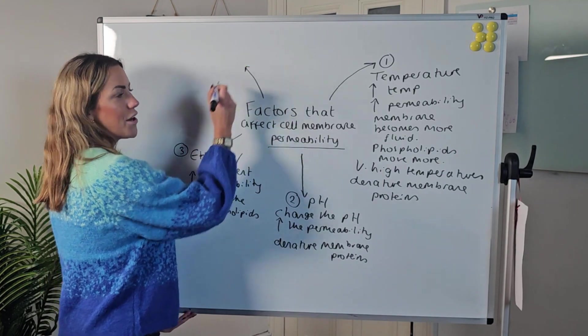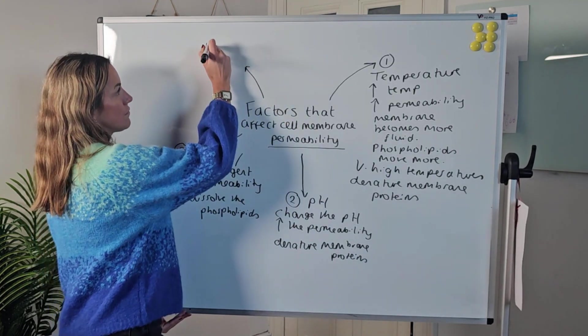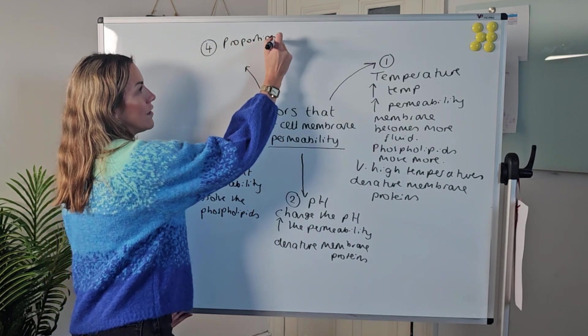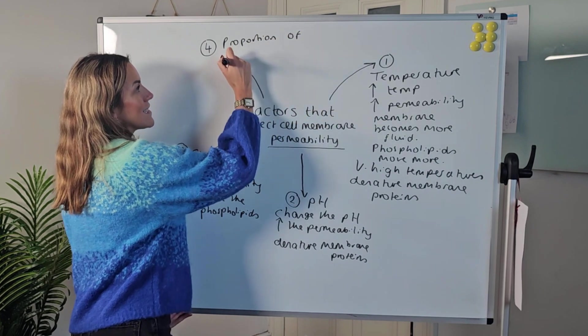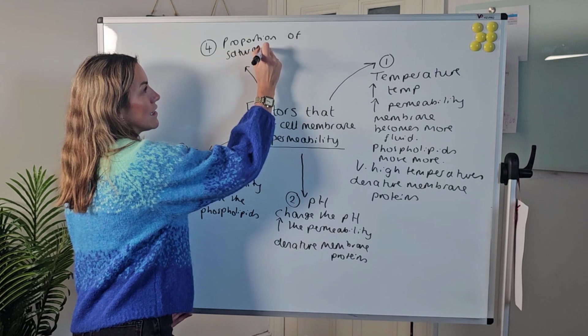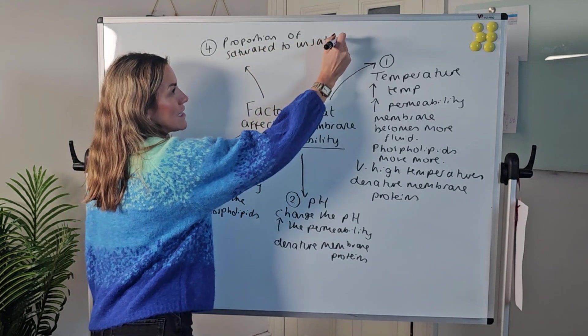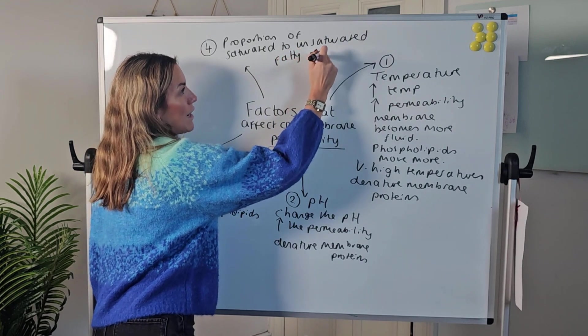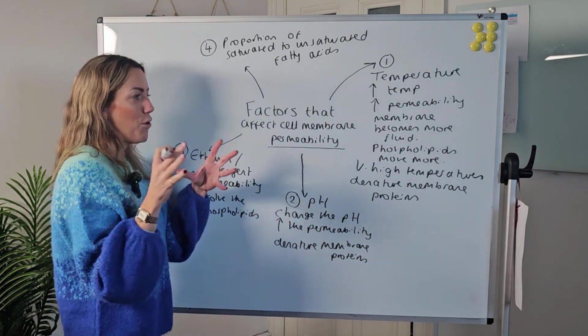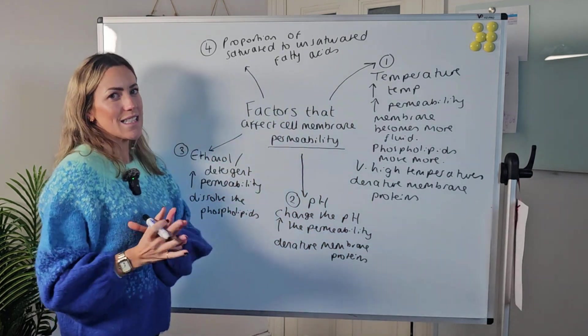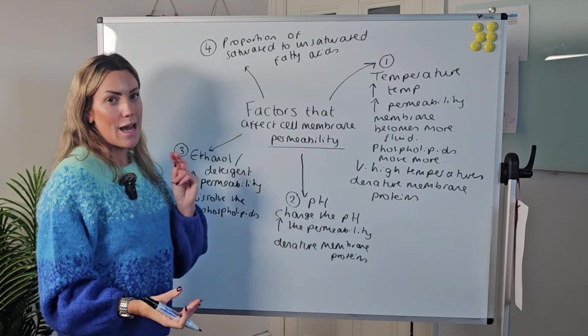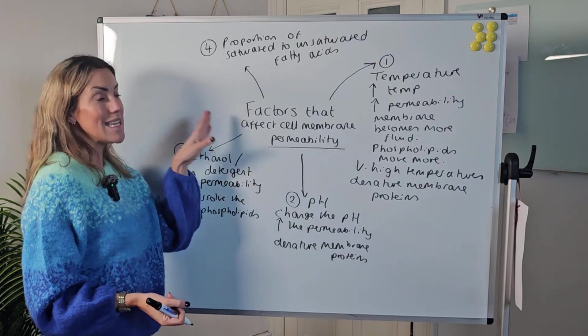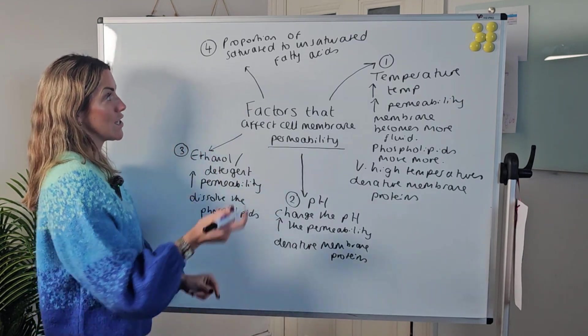But the hardest one and the one maybe we should focus on, which I'm going to label number four, is the proportion of saturated fatty acids to unsaturated fatty acids. Let's just get our head around that one. Remember, the cell surface membrane is made out of phospholipids. Each phospholipid has two fatty acid tails. Those fatty acids can be either saturated or unsaturated.